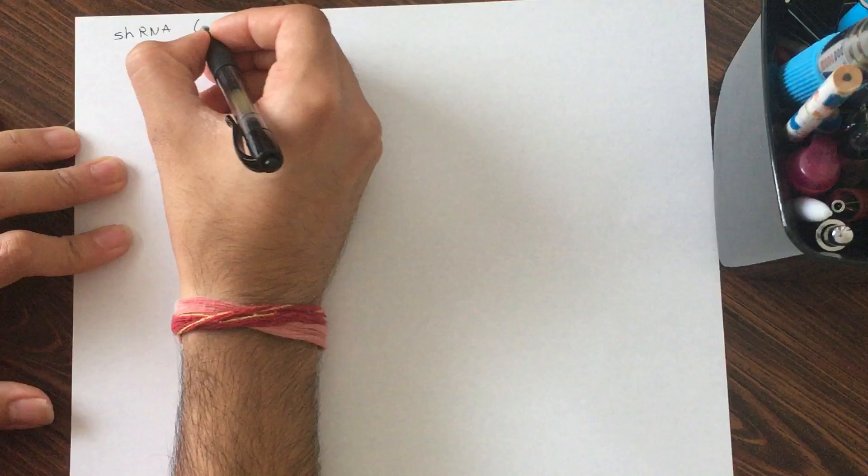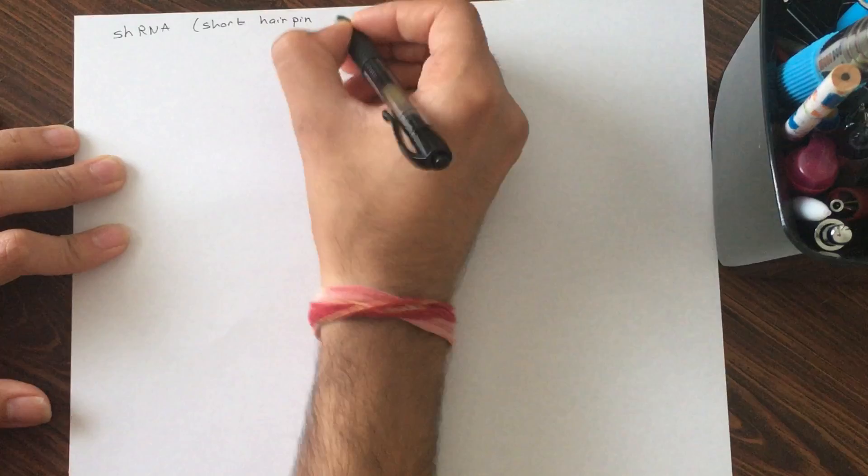This video is on the topic of RNA interference, but specifically we will be talking about another molecule that leads to genetic silencing, which is called shRNA or short hairpin RNA.